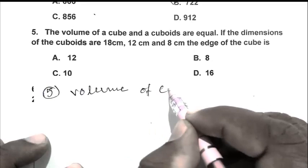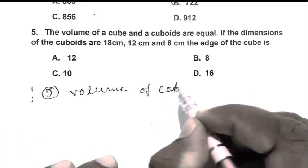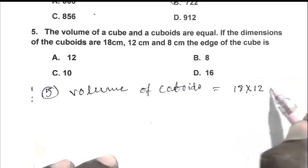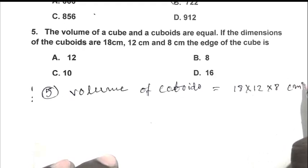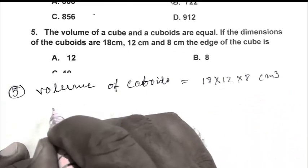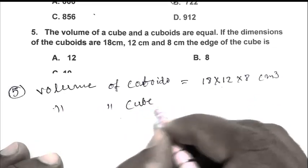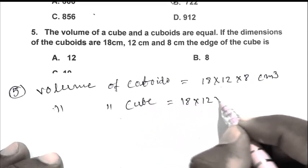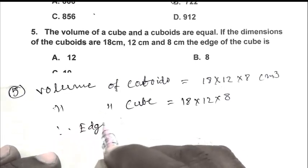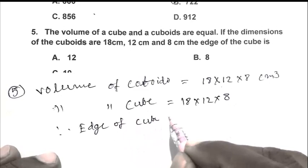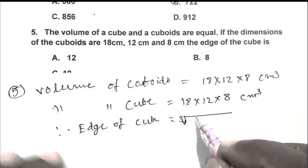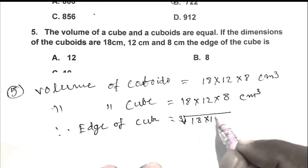So friend, volume of a cube and a cuboid is 18 multiplied by 12 multiplied by 8 cm cube. So this is also the volume of cube. So volume of cube 18 multiplied by 12 multiplied by 8. So friend, edge of cube that is cube root of 18 multiplied by 12 multiplied by 8.